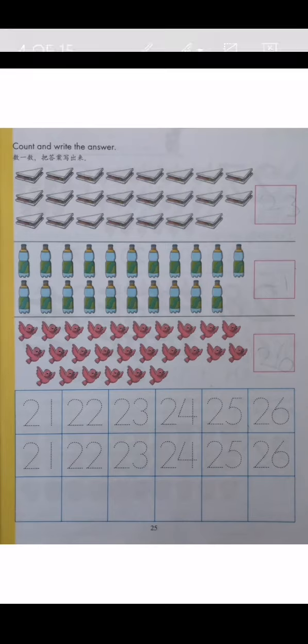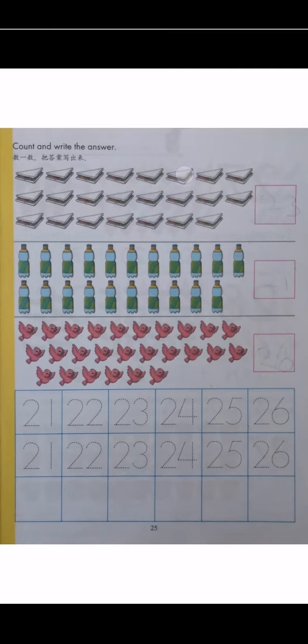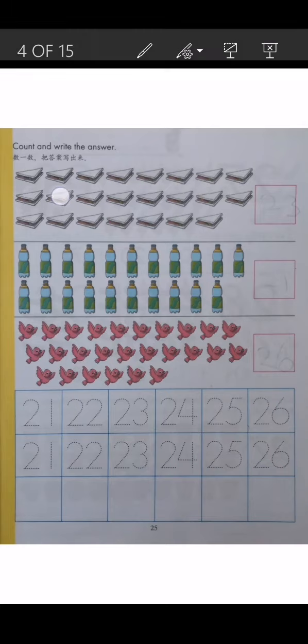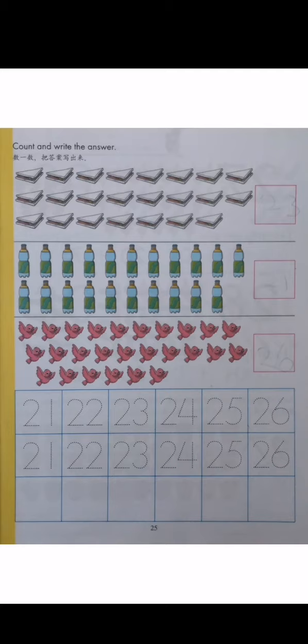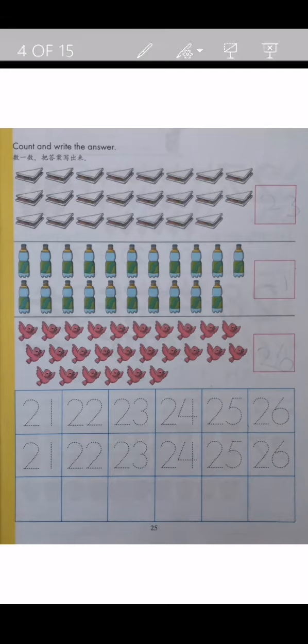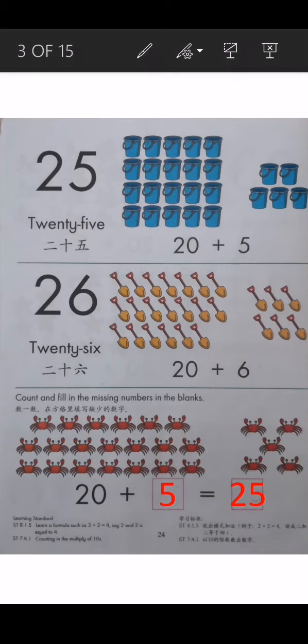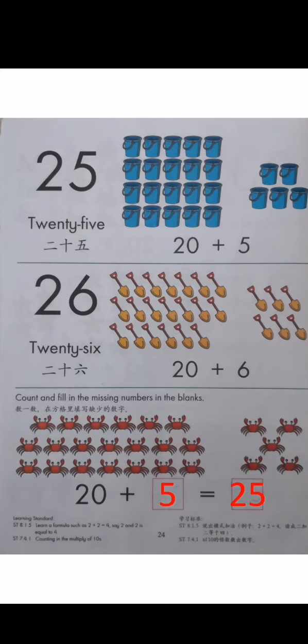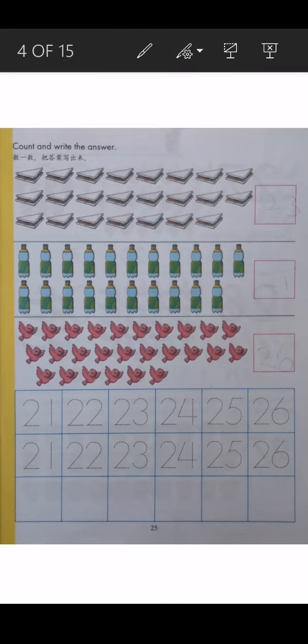Let's count together. 1, 2, 3, 4, 5, 6, 7, 8, 9, 10, 11, 12, 13, 14, 15, 16, 17, 18, 19, 20, 21, 22, 23. Children, please write 23 here.